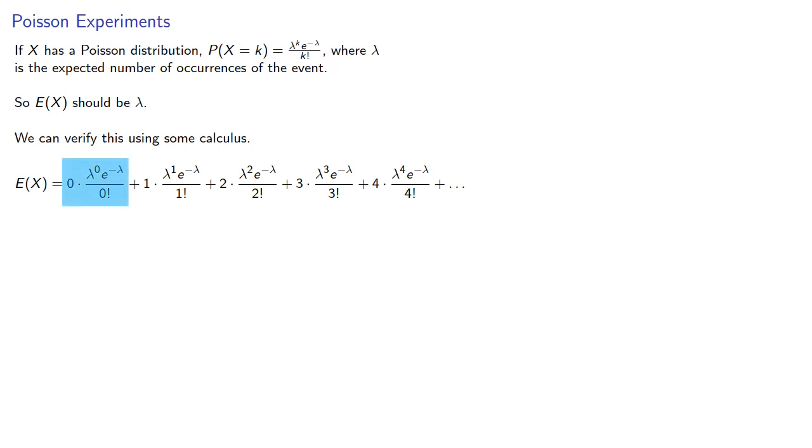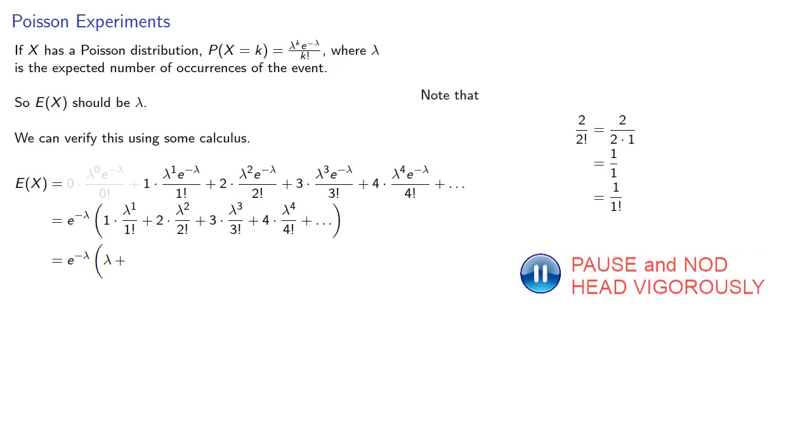First of all, the first term, since it's multiplied by 0, vanishes. Now since every term has a factor of e to the negative lambda, let's factor that out. Now there's not a lot we can really do with the first term, so we'll just copy that one down. As for the second term, we note that 2 divided by 2 factorial can simplify, and our second term becomes lambda squared.